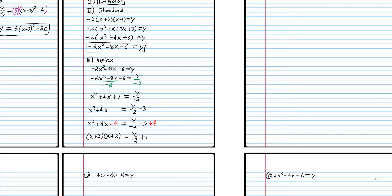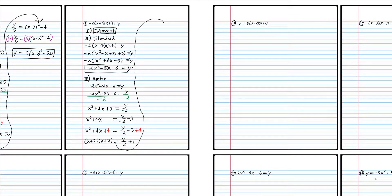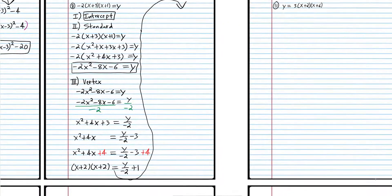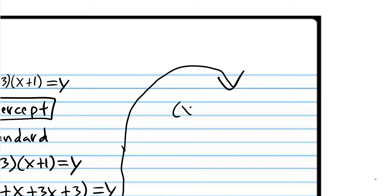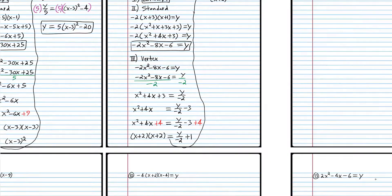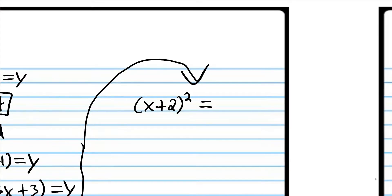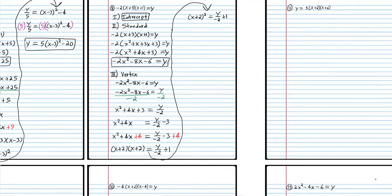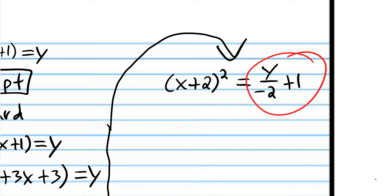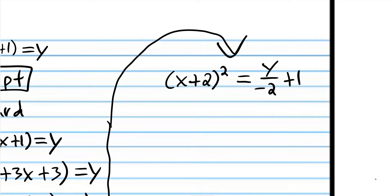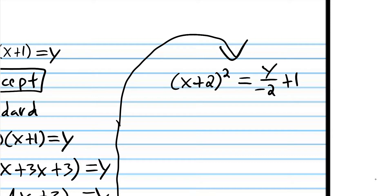We're out of room, so we'll use an arrow. We're going to take x plus 2 times x plus 2 and put it in power notation: x plus 2 squared. It equals y over negative 2 plus 1. Now all we have to do is isolate y, because vertex form — and all these forms — require y to be isolated.